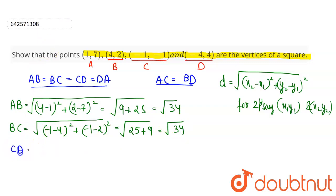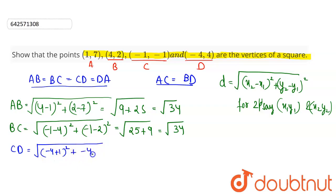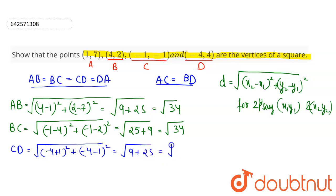Now CD will be equal to √[(−4 − (−1))² + (−4 − 1)²] = √[(−3 + 1... −4 + 1)² + (−5)²]. This equals √[25 + 9]... wait — CD = √[(−4 − (−1))² + (−4 − 1)²] = √[(−3 or −5)² + (−5)²] = √34.